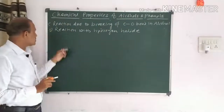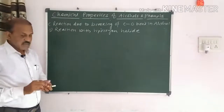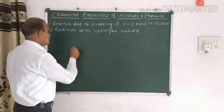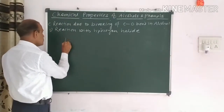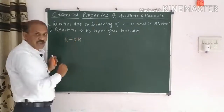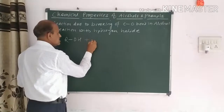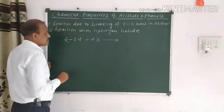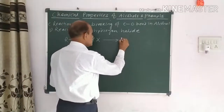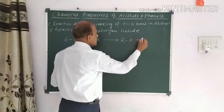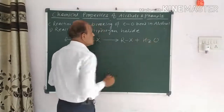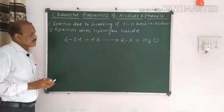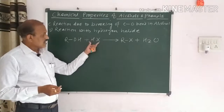The first reaction we discuss is the reaction with hydrogen halide. The general reaction is: we take any type of alcohol ROH and react it with hydrogen halide HX, which gives alkyl halide RX with the liberation of H2O. This is the general reaction. However, the reaction changes according to which hydrogen halide we use.